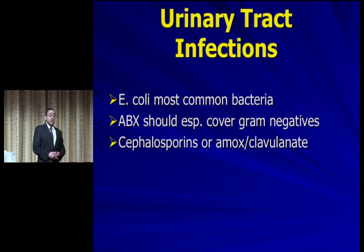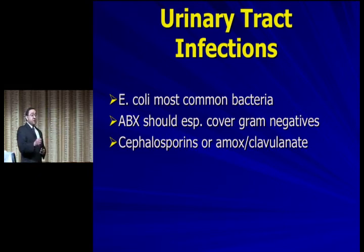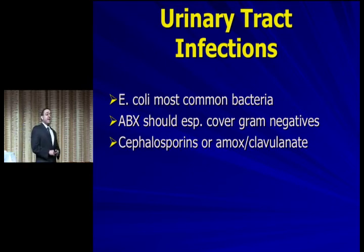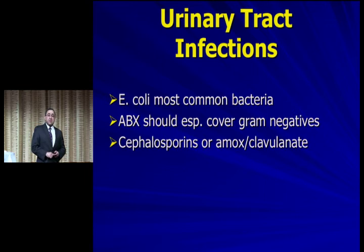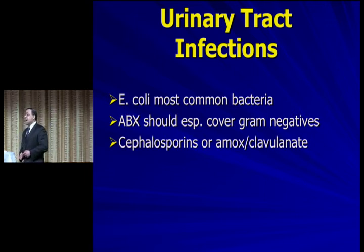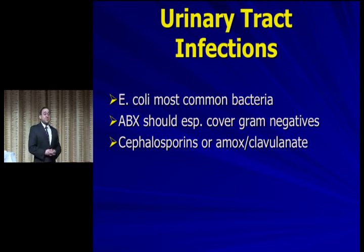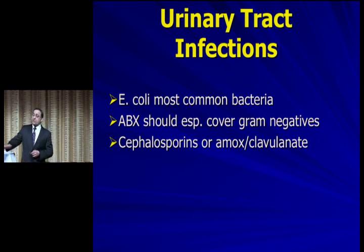The most common organisms are still E. coli. Your usual antibiotics — third-generation cephalosporins — are a great first-line agent. Amoxicillin-clavulanate is a bigger gun; just go with your cephalosporins. There's increasing resistance to quinolones, and macrodantin or macrobid is not generally recommended because of its side effect profile and because it doesn't cover ascending infections well. Cephalosporins are very effective and fairly cheap.